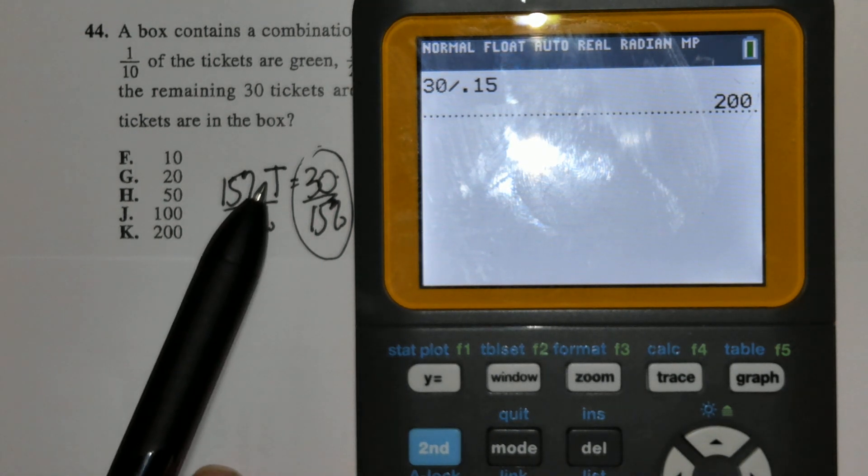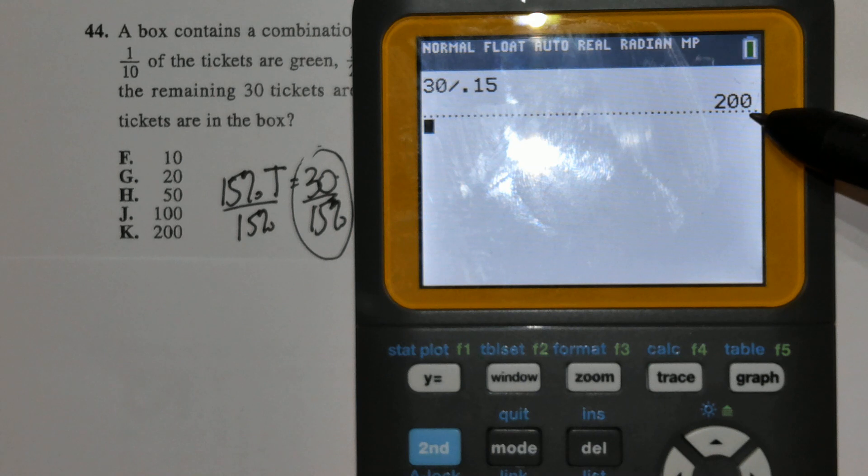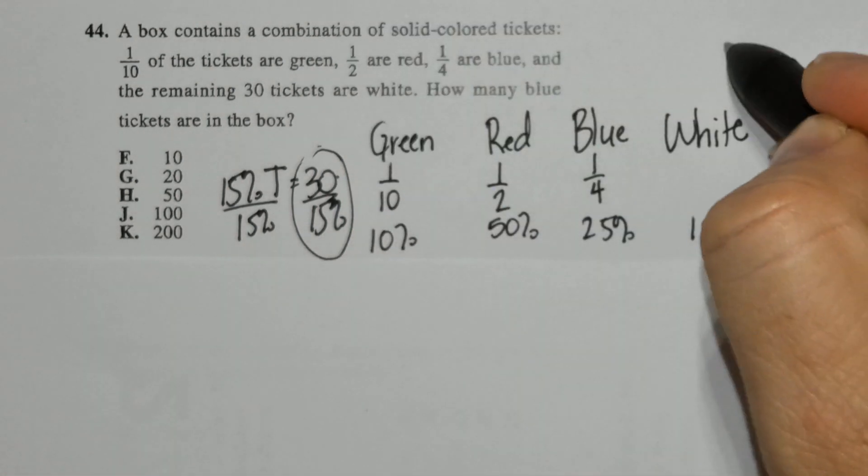This tells us what T is, the total number of tickets. That means there was a total of 200 original tickets.